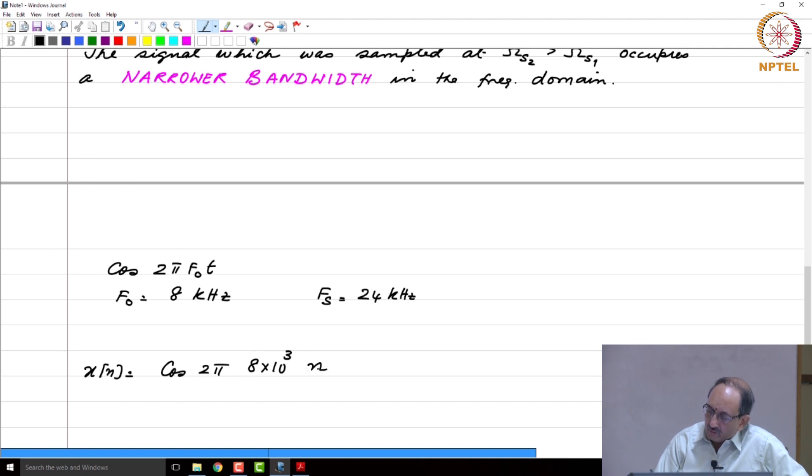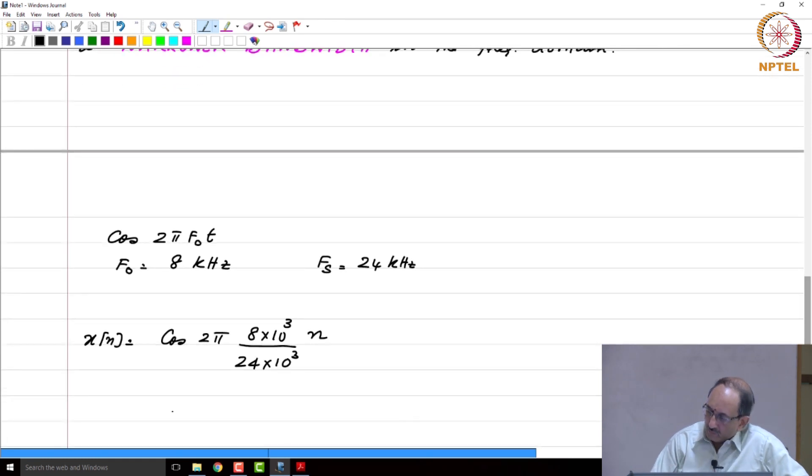So, n cap T is 1 over f_s and hence this becomes 24 times 10³ and you are going to get cos 2π/3 n.